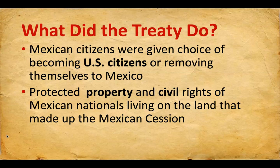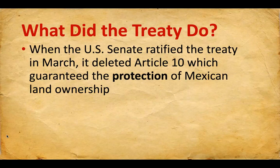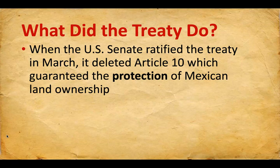Is that the way it worked out? Not really. When the treaty was sent to Washington and had to be ratified or approved by the U.S. Congress, the U.S. Senate ratified the treaty in March, but it deleted Article 10, which guaranteed the protection of Mexican land ownership. So some of these people whose families had owned land for a hundred-plus years, if they didn't have some sort of deed of ownership, they could conceivably be forced off their land — and it did happen.